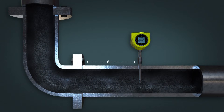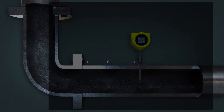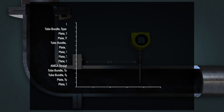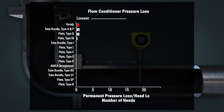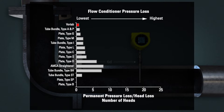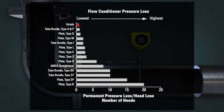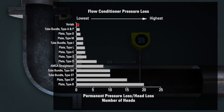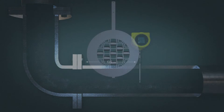Vortab flow conditioners solve this problem by creating a fully developed non-swirling flow profile in just a few pipe diameters, and Vortab achieves this with the least amount of pressure drop or head loss of all flow conditioning technologies.